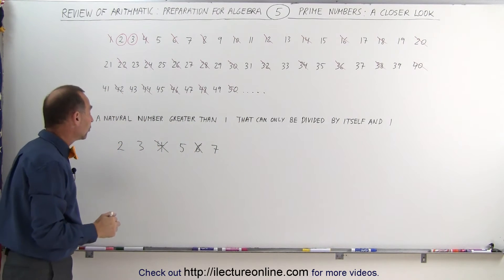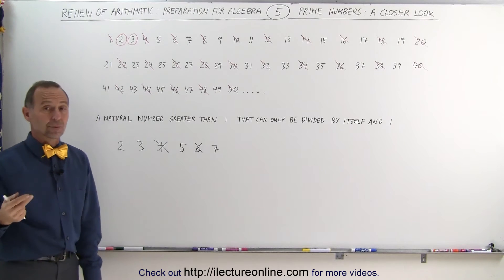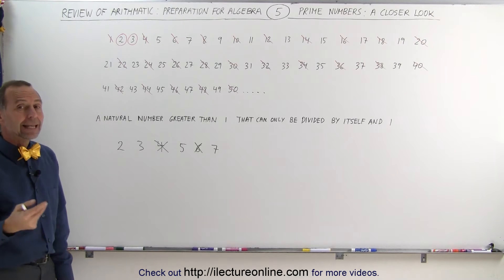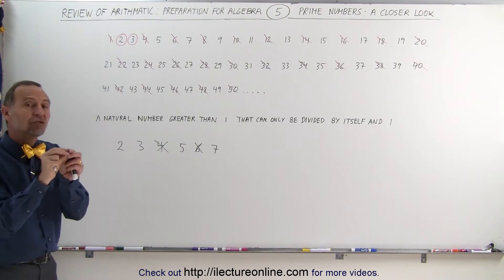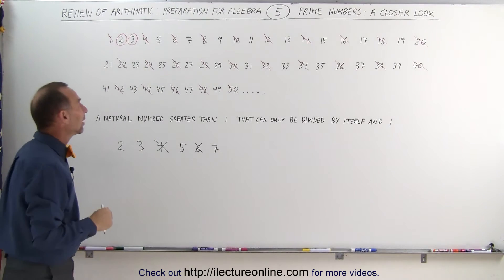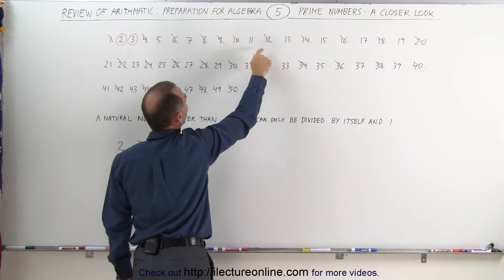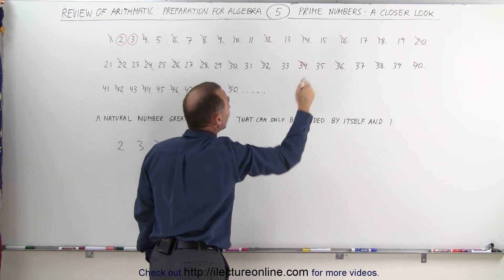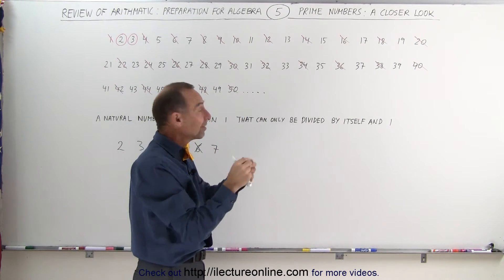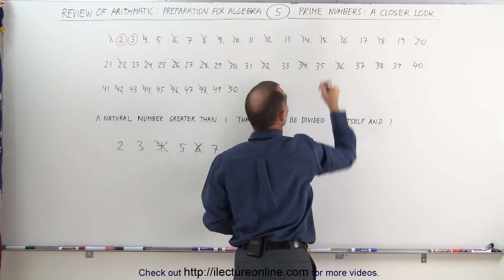Next we look for numbers that can be divided by 3. Again, if a number can be divided by 3 other than 1 and itself, then that's also not a prime number. Any number where the digits add up to a multiple of 3 is divisible by 3. For example, 9 is divided by 3, and so is 12, but 12 is an even number so we can skip that. How about 15? If I add the 1 and the 5 together that gives me 6, and 6 is divisible by 3, which means 15 is divisible by 3.